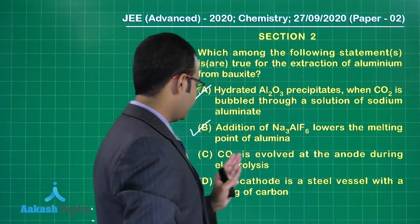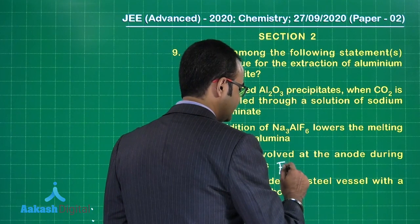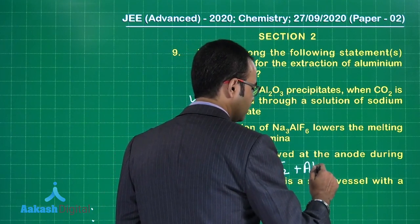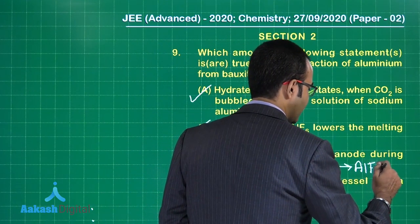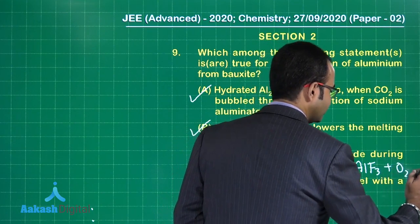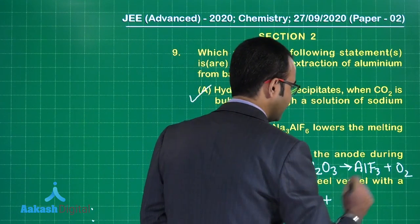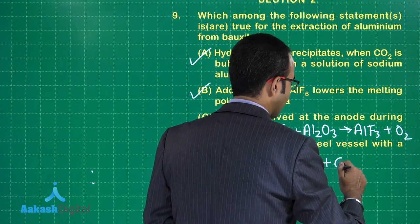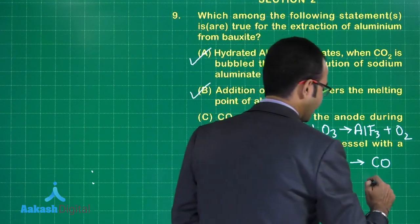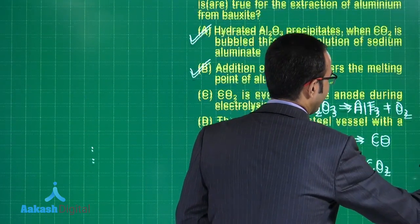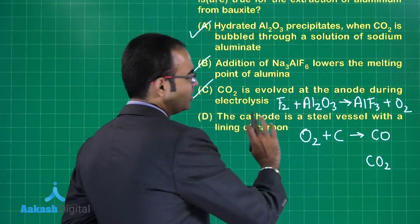Option C: CO₂ is evolved at the anode during electrolysis. The F₂ liberated reacts with Al₂O₃, giving AlF₃ plus oxygen. This oxygen then reacts with the carbon anode to give CO and CO₂. So option C is also correct.